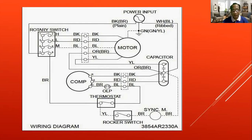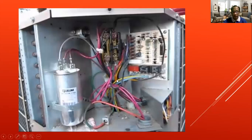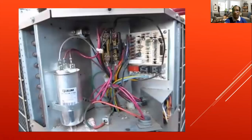The rotary switch is where we all started — it was manually rotated. From rotary, the industry evolved to semi-inverter with buttons, then full inverter with remote control. But regardless of changes, the capacitor, fan, compressor, thermostat, breaker switch, overload, and dual capacitor remain — they are always present. When reading diagrams, the motor has different colors: black, red, brown, orange, yellow. Follow the lines in the diagram to see where each wire goes.